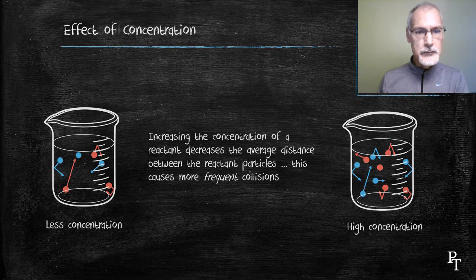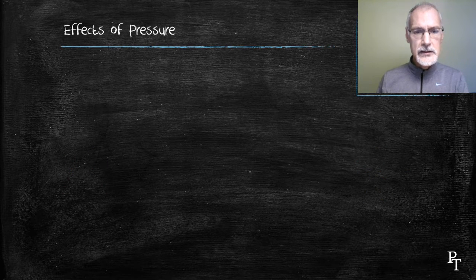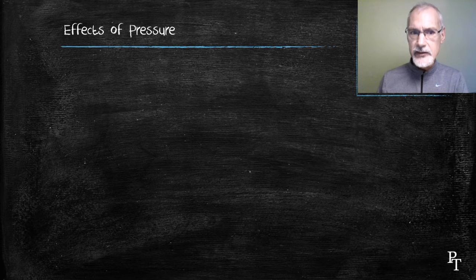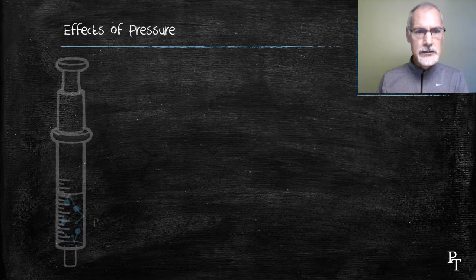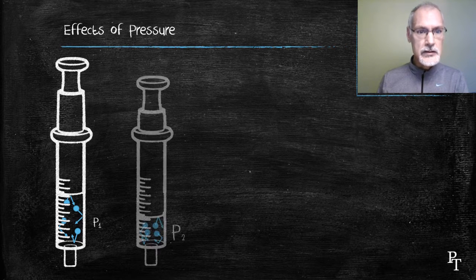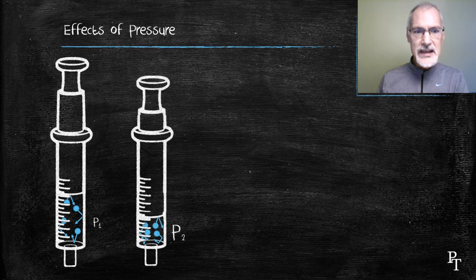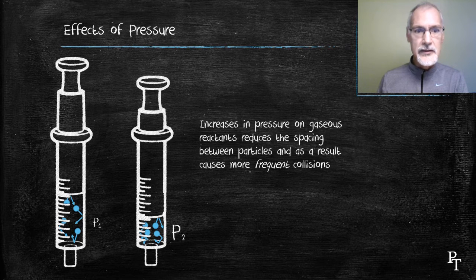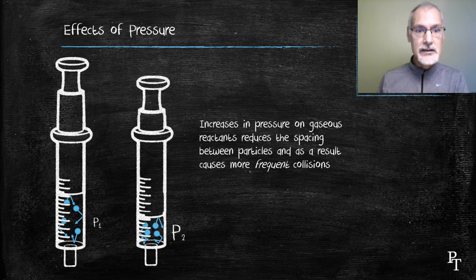Let's look at the effect of pressure. A note here about pressure: pressure only affects gaseous species. So if I have my substances at, say, pressure 1 and I increase the pressure, you'll notice again a reduction of the distance between my particles. This again leads to more frequent collisions. But make sure that you have things present in the gaseous state.